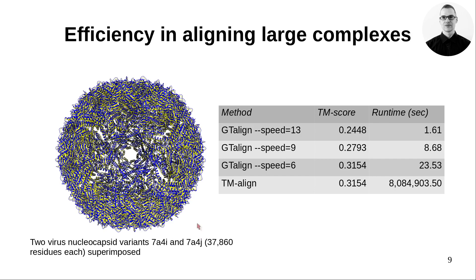GT-Align is highly efficient in aligning large protein coupling complexes, as shown in this example. Two nucleocapsid variants with different chain orders were aligned in seconds on a single GPU. In contrast, aligning these complexes using TM-Align took more than three months. Usually TM-Align is not used to align complexes; this example is just to demonstrate GT-Align's efficiency.